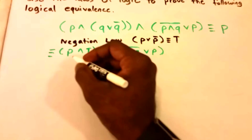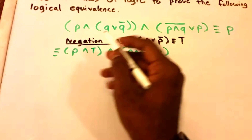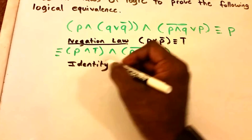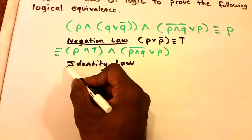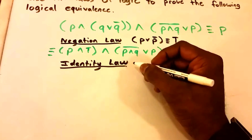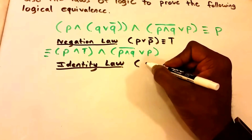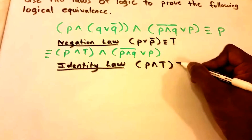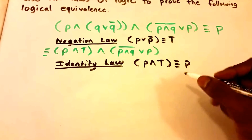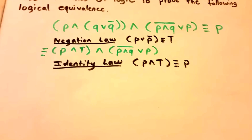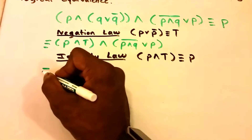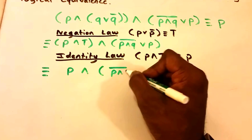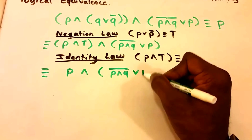Now let's use the Identity Law. The Identity Law basically says P∧True is logically equivalent to P. So if we rewrite our equation, we get: P ∧ ¬P∧Q ∨ P.